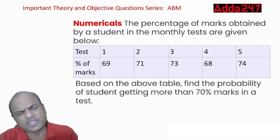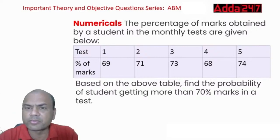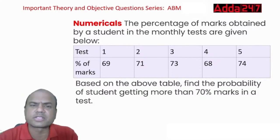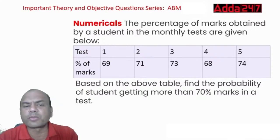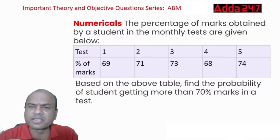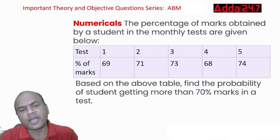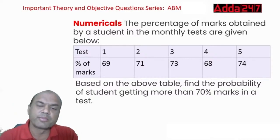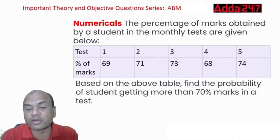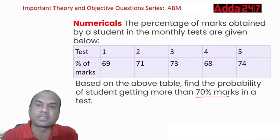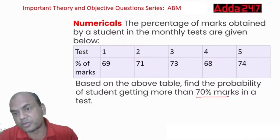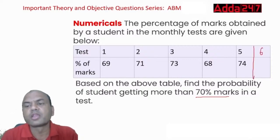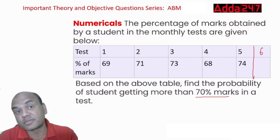Let's solve the numericals — simple ones, but in the exam they come for one mark and we often get confused. The question: the percentage of marks obtained by a student in monthly tests are 69, 71, 73, 68, and 74 across five tests. Find the probability of the student getting more than 70% in test number six.